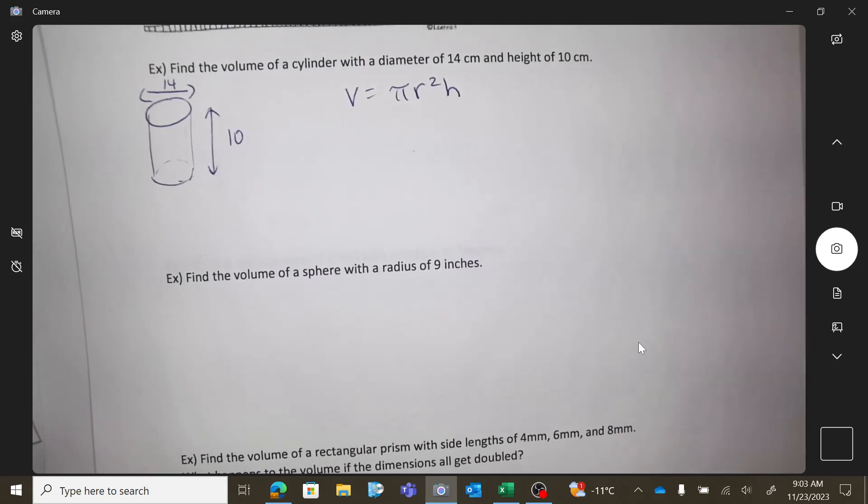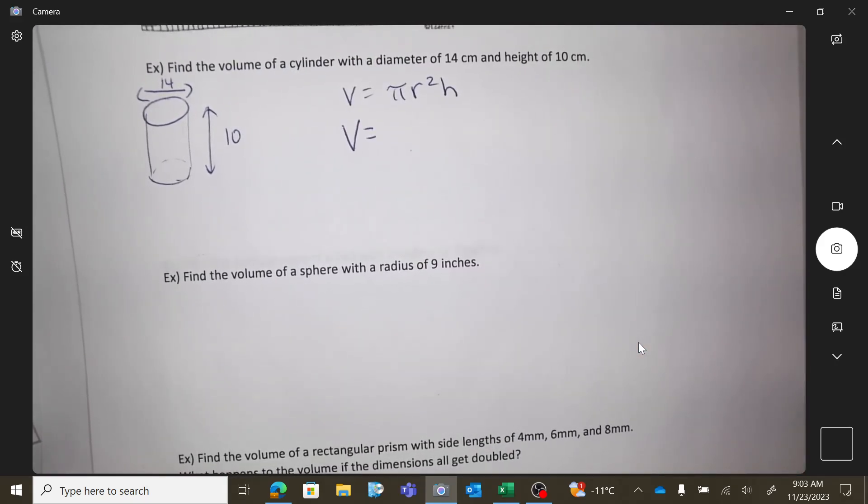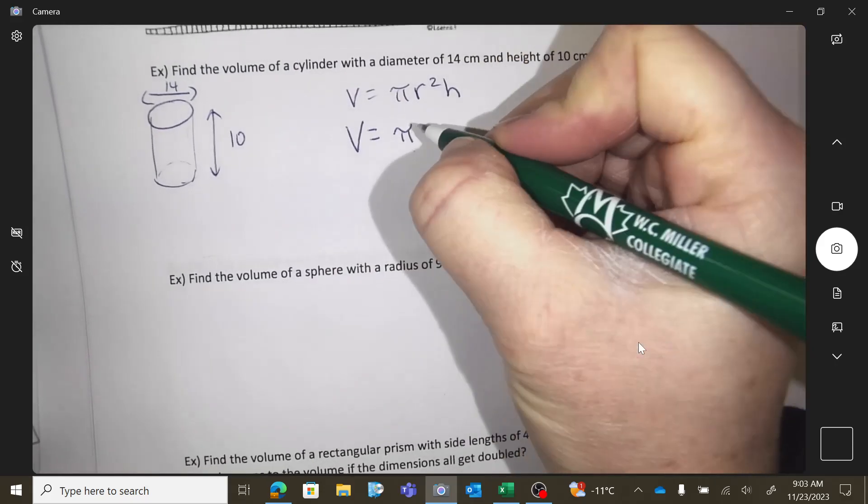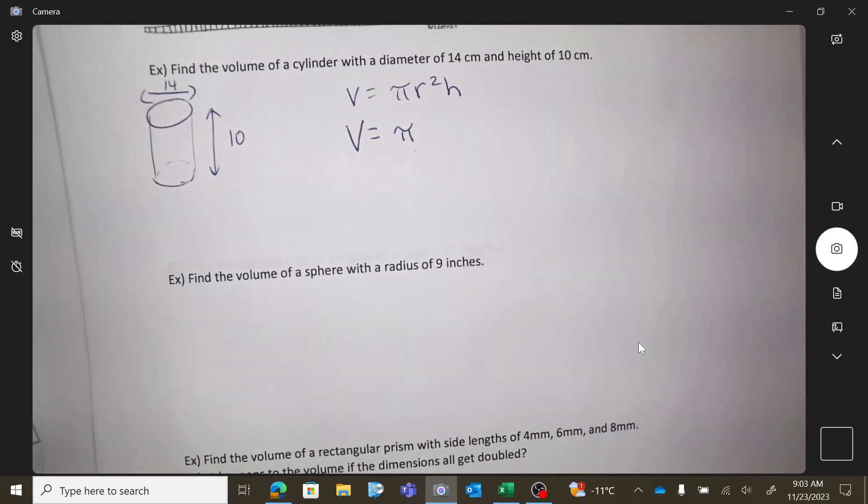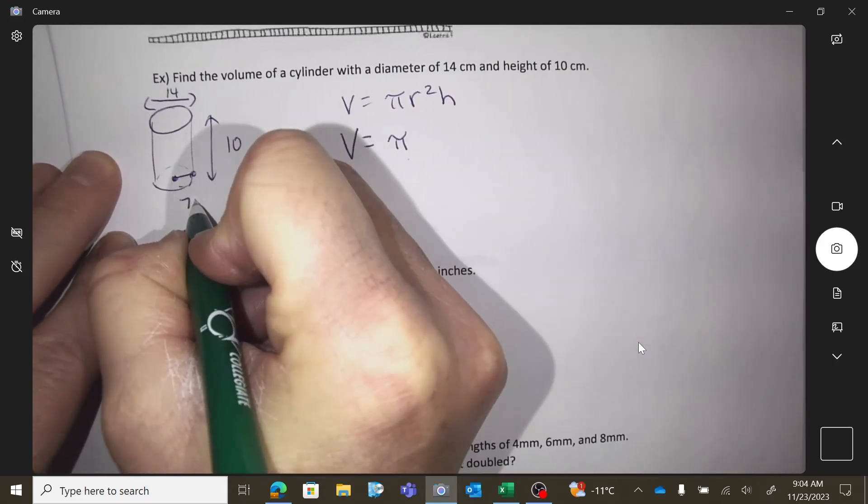Find the volume. So volume is going to be V equals pi R squared H. And what can I replace R with? Seven. Seven, good. Did you spot that? Because 14 is not the radius, right? It's a diameter. So 14 is a diameter, so the 7 is a radius.